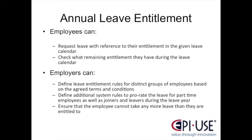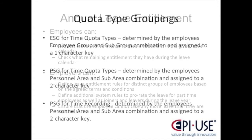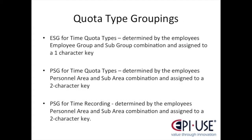Let's look at the configuration elements that allow the system to determine and create the correct amounts of leave for each employee. While the concepts around defining leave entitlement rules with quotas are logical, they're heavily dependent on defined groupings in the system. I'll concentrate on the base entitlements and selection rules only. Base entitlements define the available quota types and amount of entitlement applicable to all employees in a defined set of groupings. The groupings used to assign the base entitlement are the ESG for time quota types.